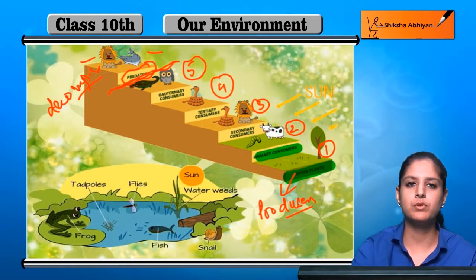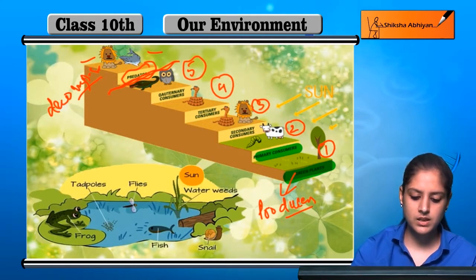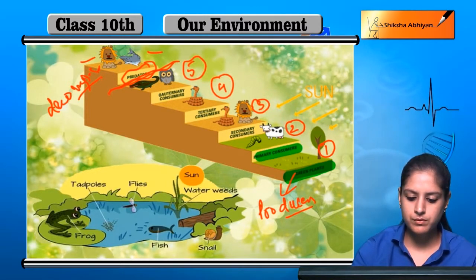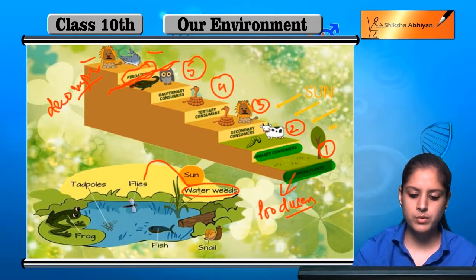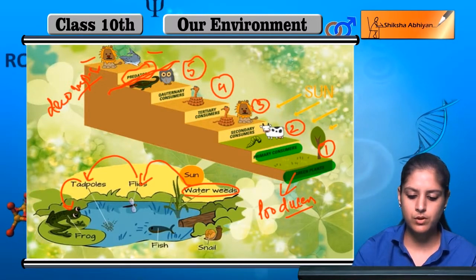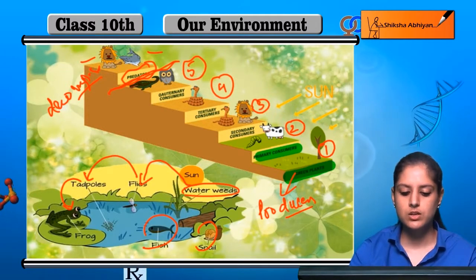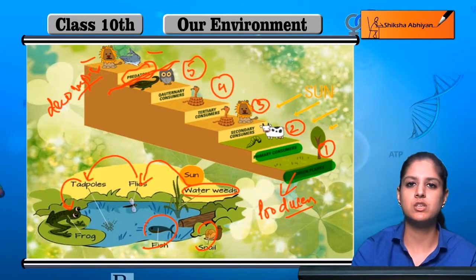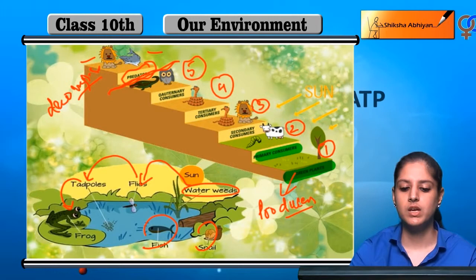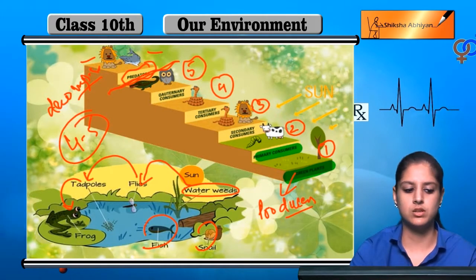This is the maximum 4 to 5 levels of the food chain. If you look inside a pond, it can also work like this. There are water weeds, which feed flies, tadpoles, frogs, fish, and snails. This is part of the food chain. In this way, a pond runs its own food chain, and trees and forests run their own food chains. The levels go up to a maximum of 4 to 5.